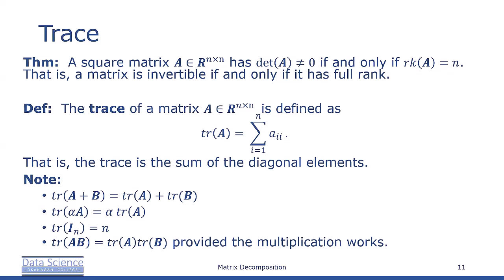The trace of a square matrix is defined as the sum of the diagonal entries: tr(A) = Σa_{ii}. The trace has several important properties: tr(A + B) = tr(A) + tr(B); tr(αA) = α·tr(A); tr(I_n) = n for n×n identity matrices; and tr(AB) = tr(BA), provided the dimensions allow the multiplications.